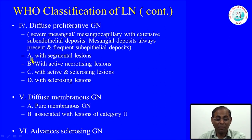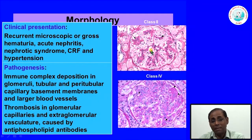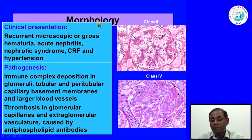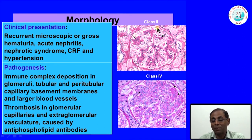Class 5 is diffuse membranous glomerulonephritis — pure membranous or associated with focal proliferation. Class 6 is advanced sclerosing glomerulonephritis. These morphological patterns correspond to those discussed in earlier cases of glomerulonephritis. To illustrate: one glomerulus shows mainly mesangial hypercellularity with normal capillary walls and a few focal neutrophil infiltrates — typical of mesangial proliferative lupus nephritis.